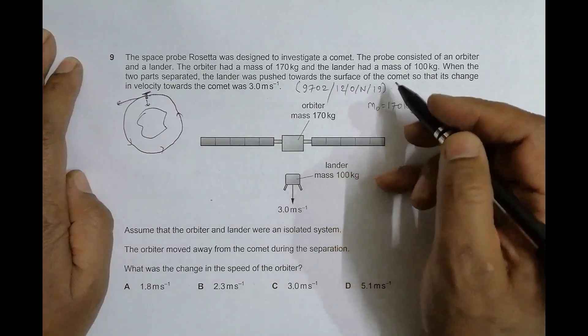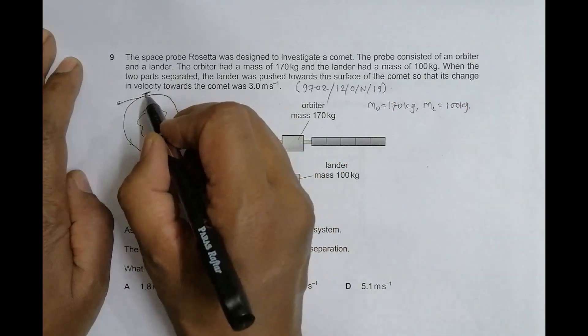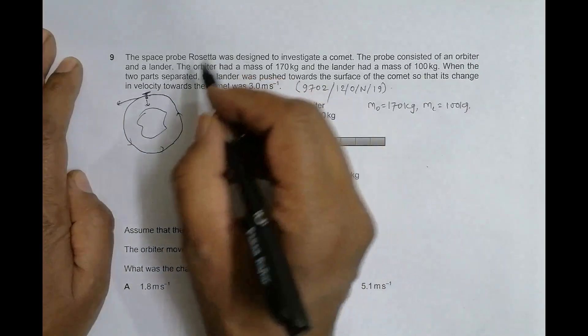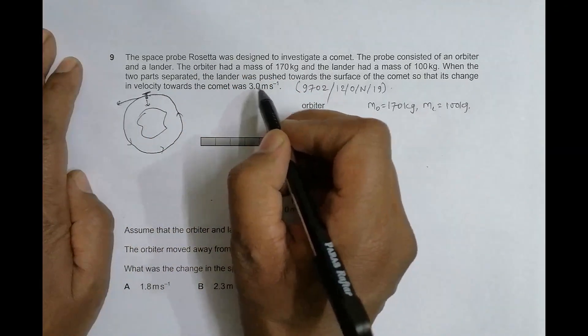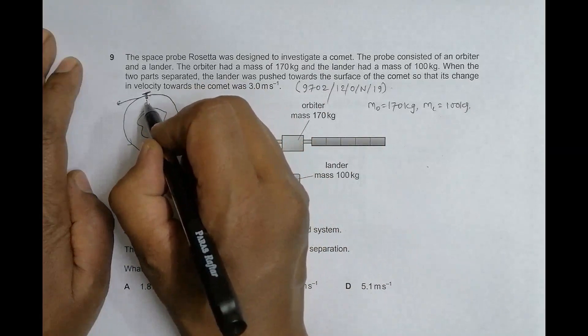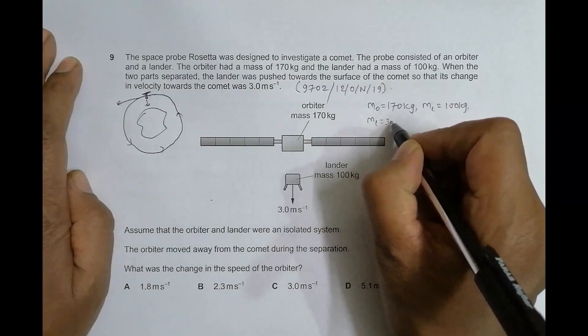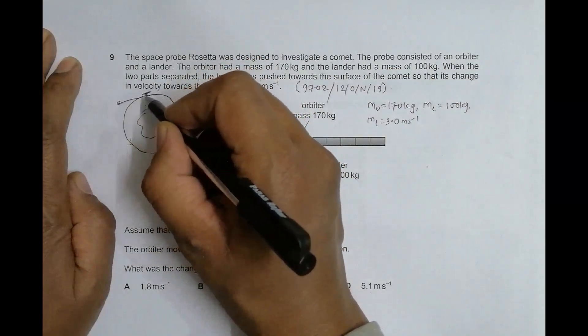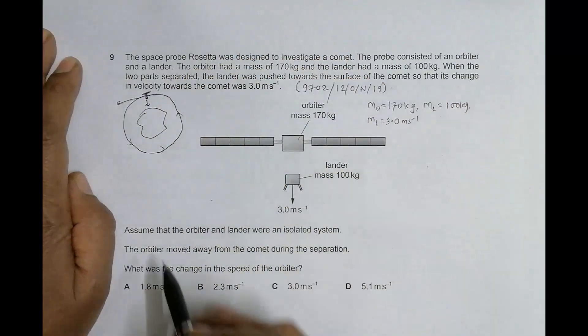Many people said they were confused about this. What it means is that initially it was moving in almost circular orbit, so the velocity of this thing towards the comet was zero - it was moving tangentially. So now it is 3 meter per second, that means the change will be 3 minus 0, which equals 3.0 meter per second. The change in magnitude is the same because initially the velocity towards the surface was zero.